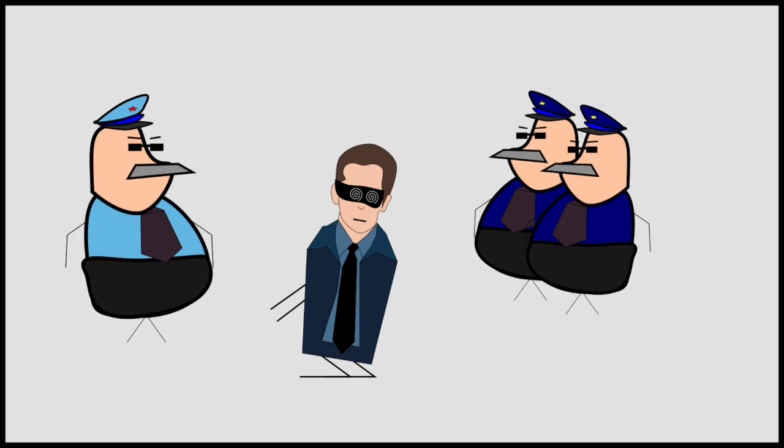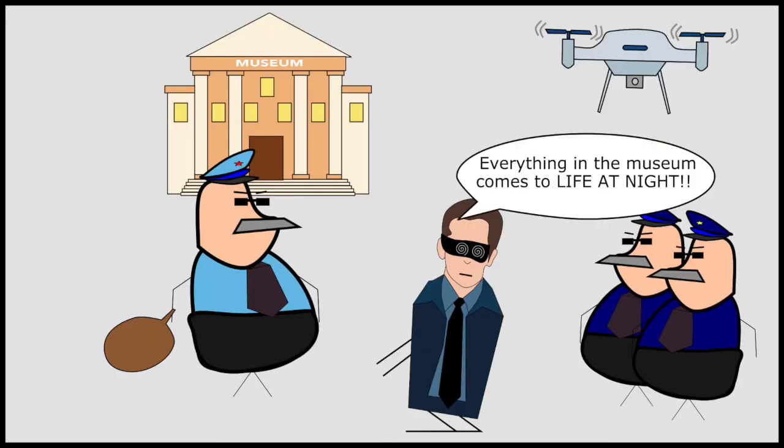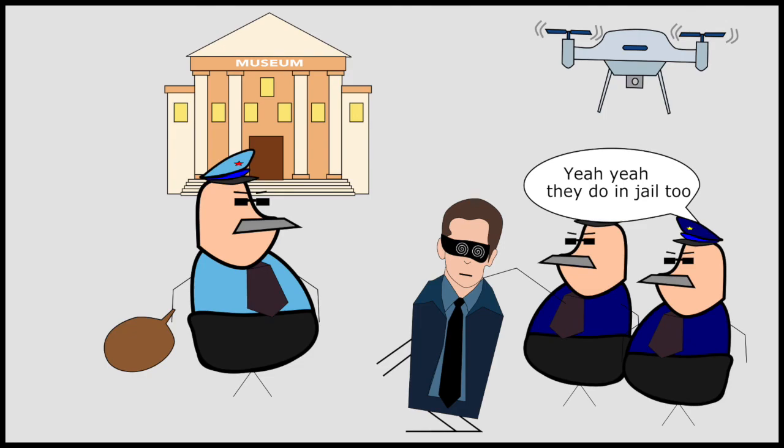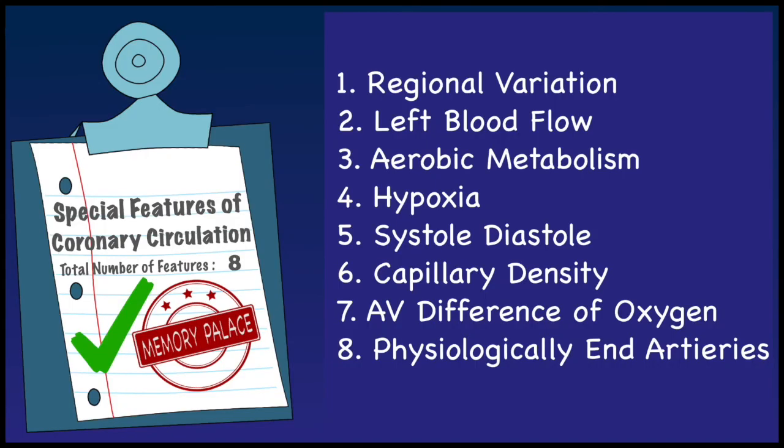The thief is handed over to the cops. All the artifacts are restored. Everyone lives happily ever after. So that's it. Those were the 8 special features of coronary circulation.